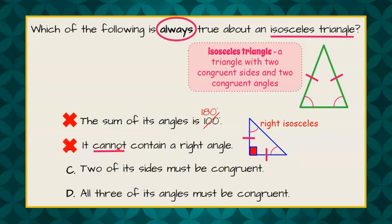Choice C. Two of its sides must be congruent. Well, it looks like that is true, right? Because we have this in our definition, a triangle with two congruent sides. So, I'm going to check this and keep it as what I think the answer is, but I'm going to check D to be sure.